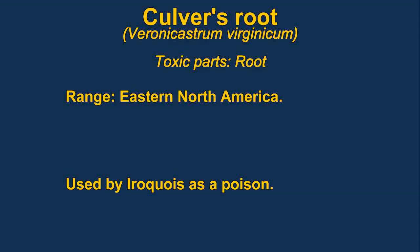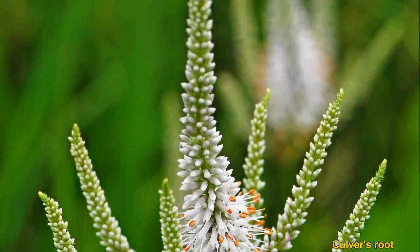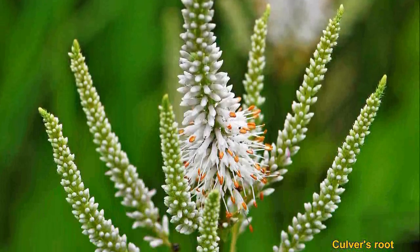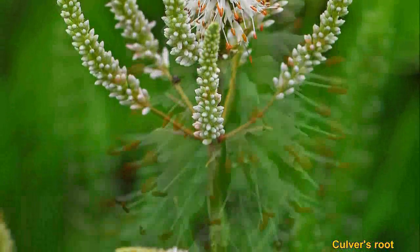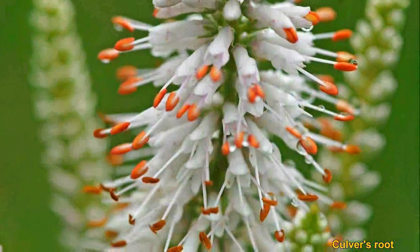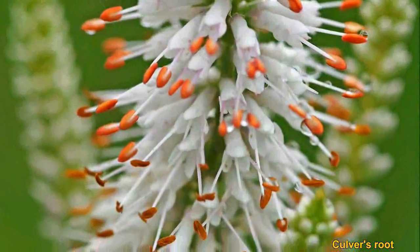Culver's root, or black root, is widely used in herbal medicine. It is touted to be a liver tonic and other uses, but it was used by the Native Americans as a poison.